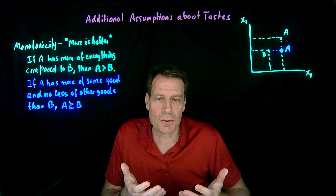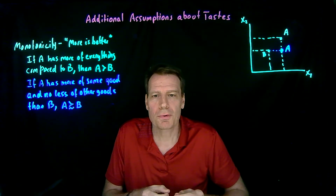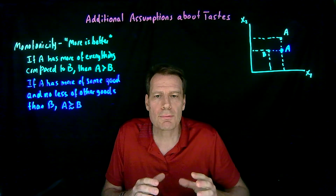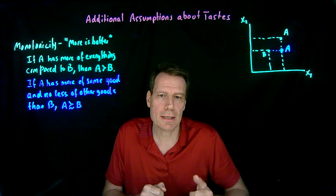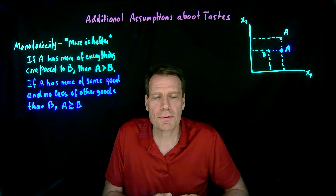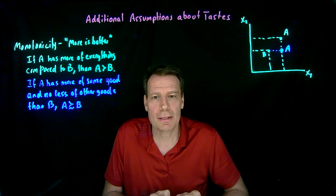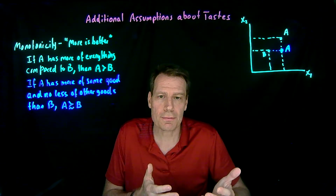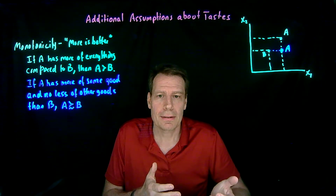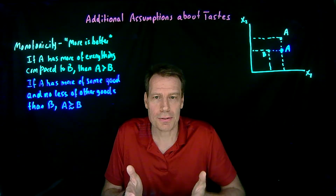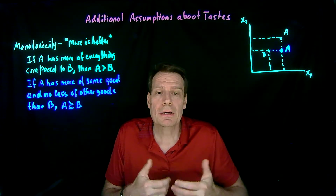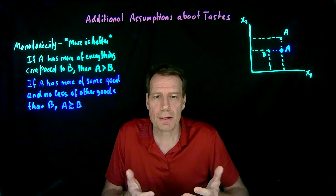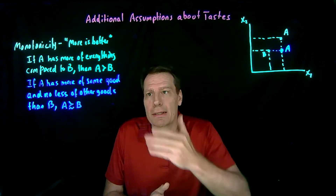Now of course there are goods where less is better — trash, for example. We prefer to have less trash rather than more. But even in those cases, we can typically redefine the goods in a way such that the monotonicity assumption holds. So instead of defining the good as trash, we define it as relative lack of trash, and a greater relative lack of trash would be better than a smaller relative lack. So typically we'll make the assumption that with the kinds of goods we model, more is better in the way we've defined here.